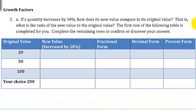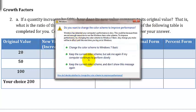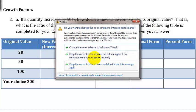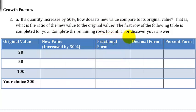Now we're going to fill in a table. If a quantity increases by 50%, how much does its new value compare to its original value? That is, what is the ratio of the new value to the original value? The first row of the table is completed for us, and we'll complete the remaining rows to confirm our answer.